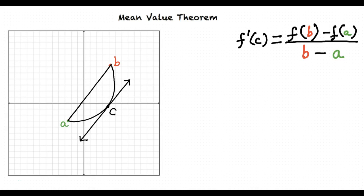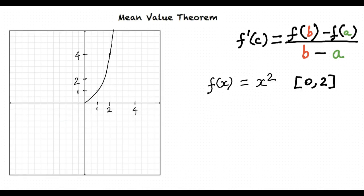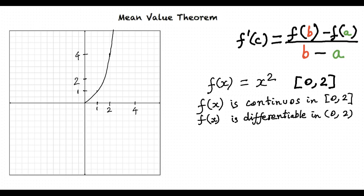Now let's do an example to make this more clear. Consider the function f(x) equals x squared in the interval [0, 2]. As we can see, a rough sketch of the function has already been graphed out. Is the function continuous in the interval [0, 2]? Yes, the function is continuous in the interval [0, 2] as we can see from the graph.